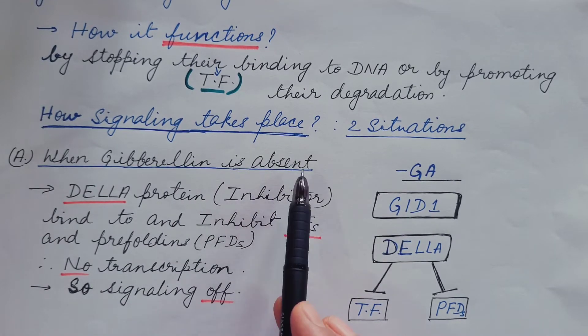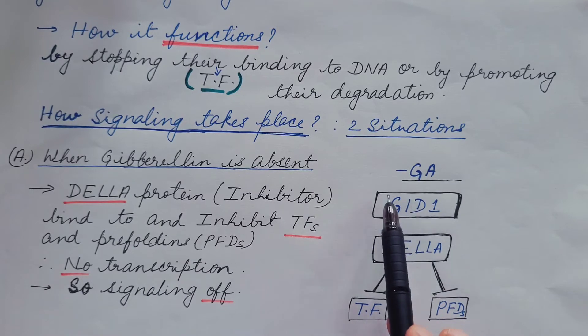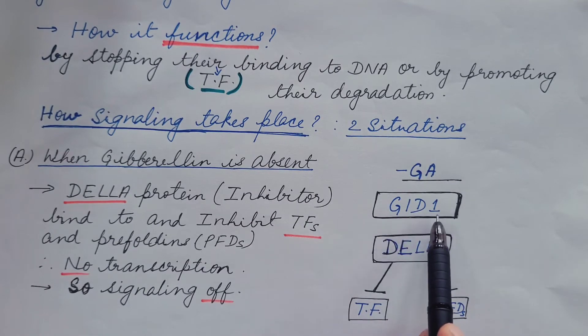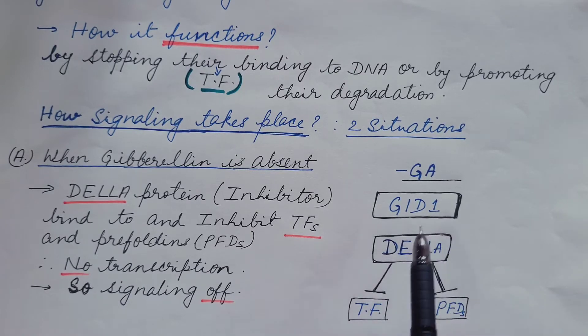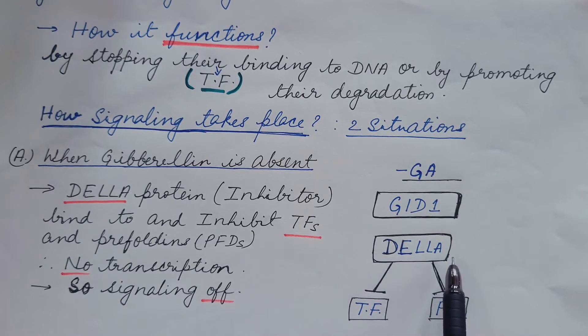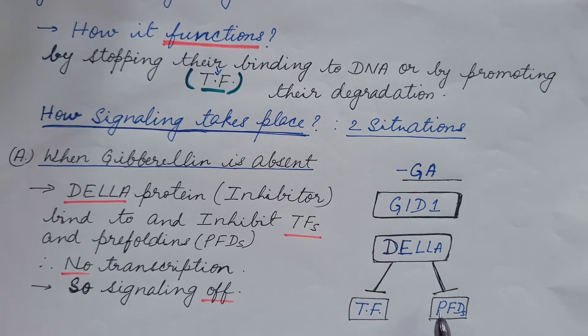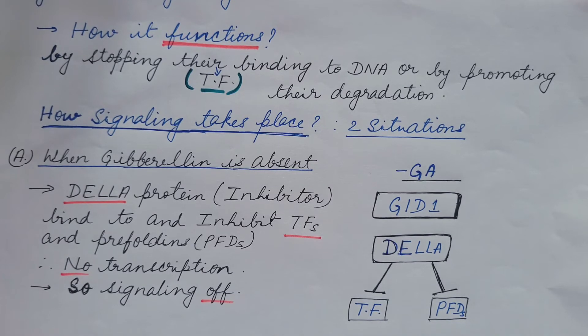First situation: when gibberellin is absent. In the absence of gibberellin, no gibberellin comes and binds with this receptor GID1. Hence, this DELLA protein which is inhibitor binds to transcription factor and prefoldins. As a result, these are not able to transcribe genes.